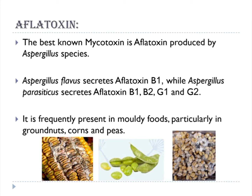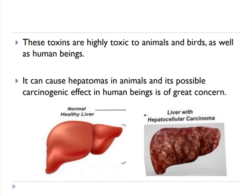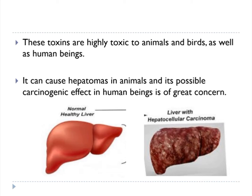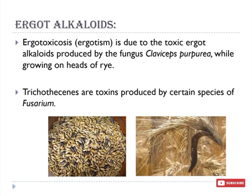Aflatoxin is frequently present in moldy foods, particularly in groundnuts, corns, and peas. These toxins are highly toxic to animals and birds, as well as human beings. It can cause hepatomegaly in animals, and its possible carcinogenic effect in human beings is of great concern.